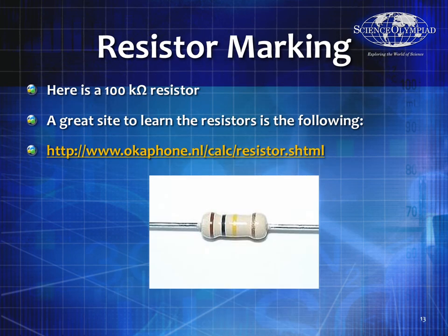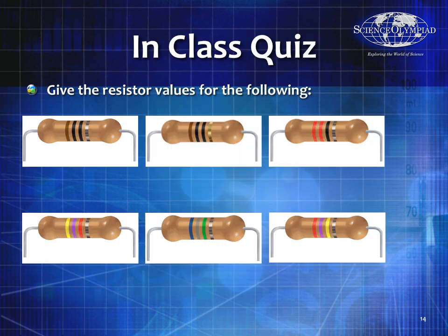Here's a 100-kilohm resistor with bands brown, black, yellow — and the fourth band is silver, so it's plus or minus 10%. In a class quiz, notice that some resistors like brown-black-black appear twice but with different fourth bands — one silver, one gold — giving the same resistance value but different tolerances. Even when the same colors are used in different orders, the result differs because it's an order-of-magnitude problem.